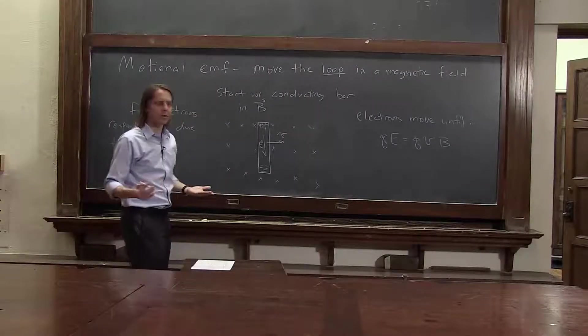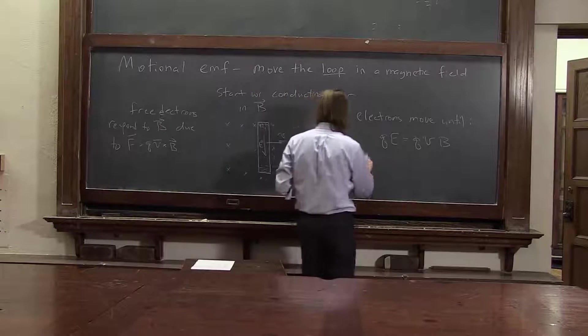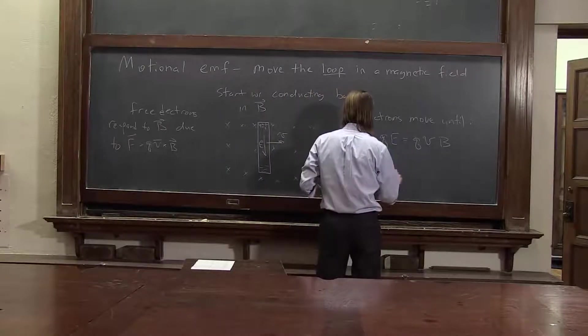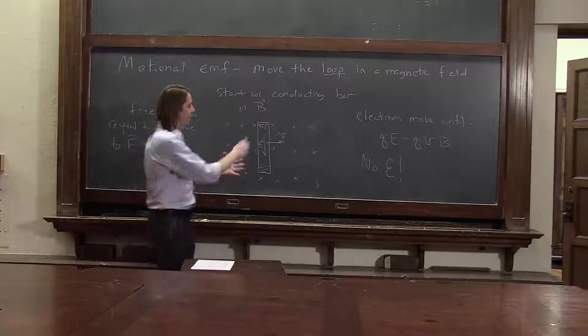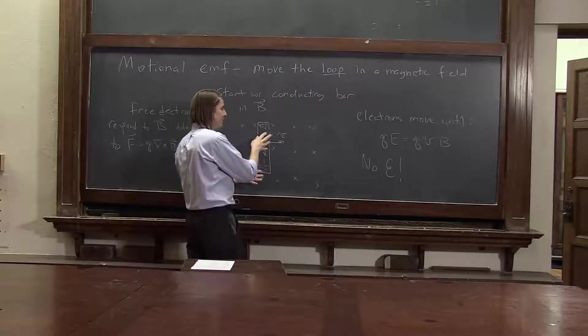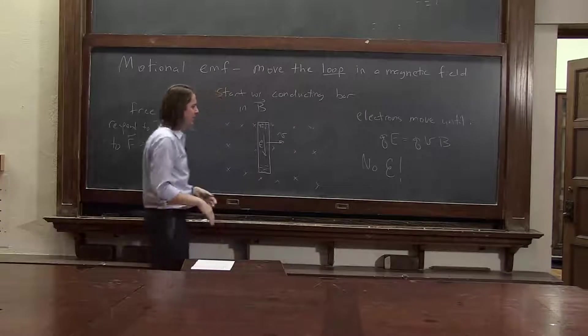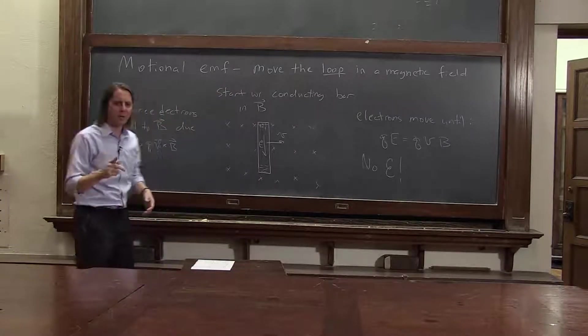But where's the EMF? There's no EMF. There's no current flow here. This is just a static thing that happens, a static situation. If it's moving with constant velocity, you'll get this separation. It just sits there. There's no current flow.